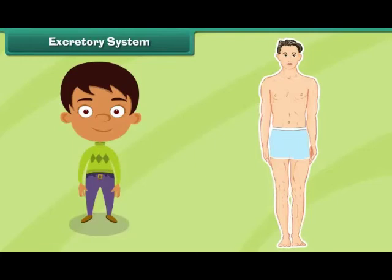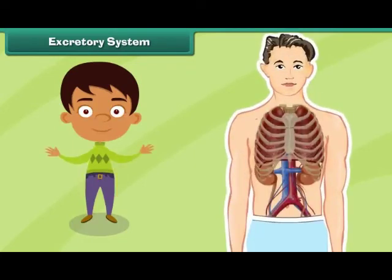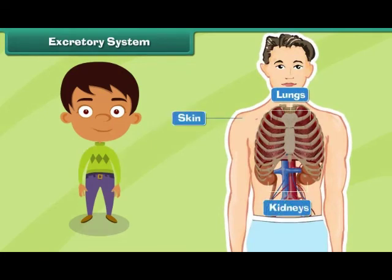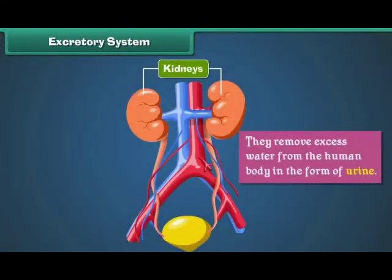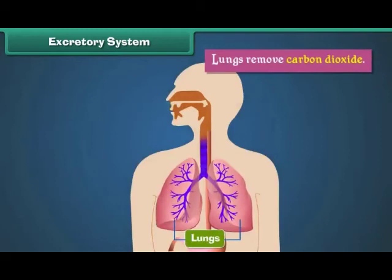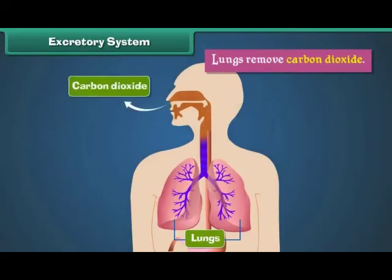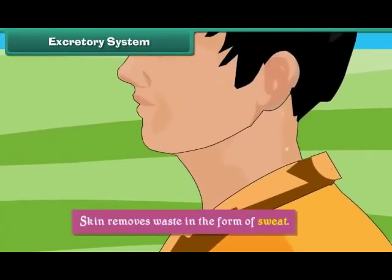Excretory system. The human excretory system is made up of lungs, kidneys and skin. It removes waste from the human body. Kidneys purify blood and remove excess water from the human body in the form of urine. Lungs remove carbon dioxide. Skin removes waste in the form of sweat.